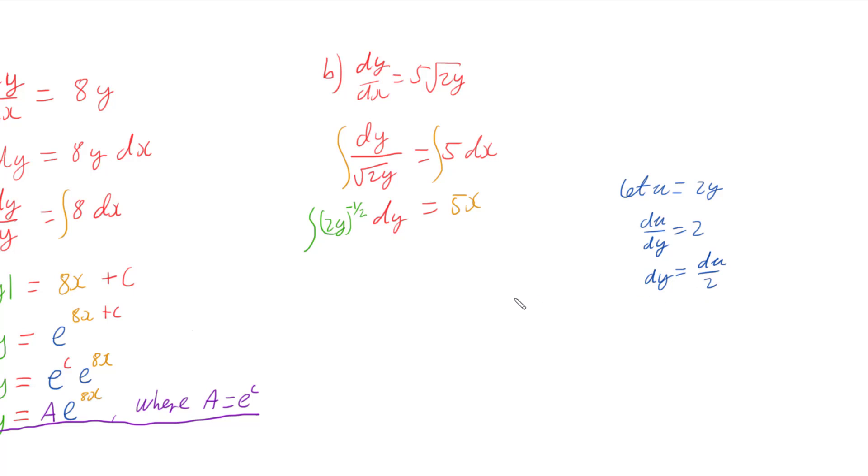So if I substitute these values in, I'm going to have the integral of u to the negative a half, and the dy is going to be replaced with du/2. And that's still equals 5x.